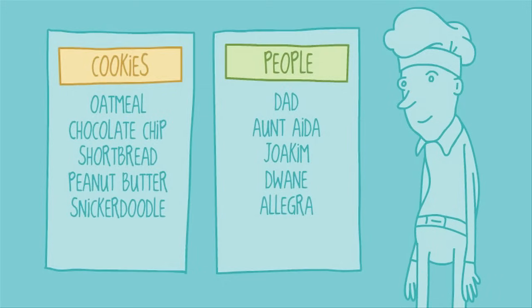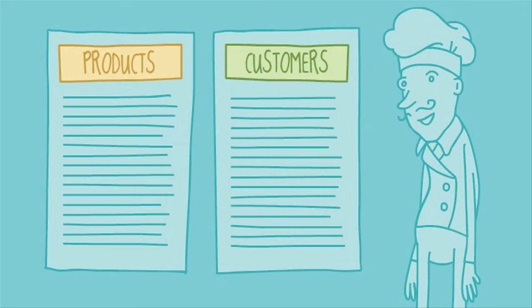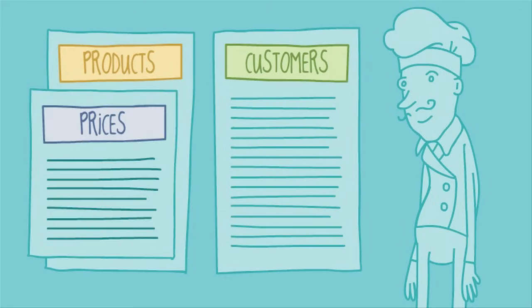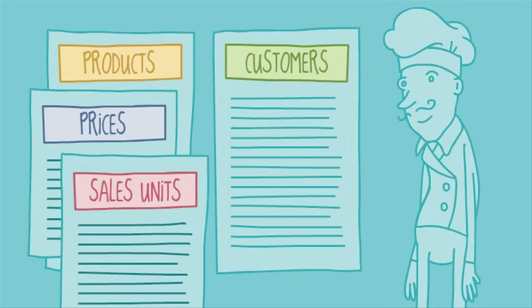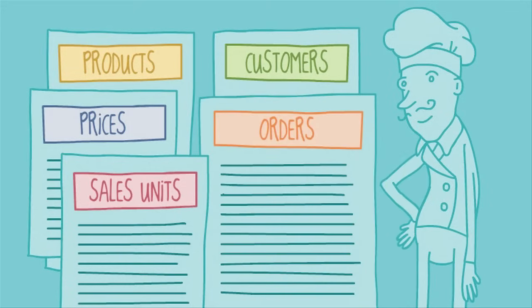If you were a professional baker, your database would contain more. You'd have products and customers, and other things to keep track of, like prices, sales units, and a list of orders.